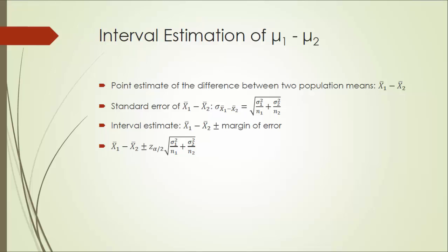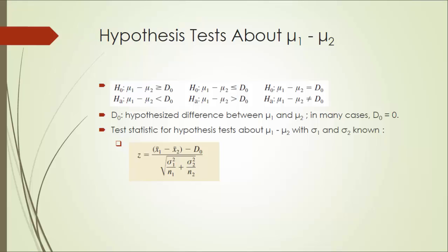Next, let's look at hypothesis testing. In the hypothesis test about the difference between two population means, we have similarly three forms of the tests: lower tail test, upper tail test, and two tailed test. Here, D0 is called the hypothesized difference between two population means. In many cases, as a matter of fact, D0 will simply be zero.